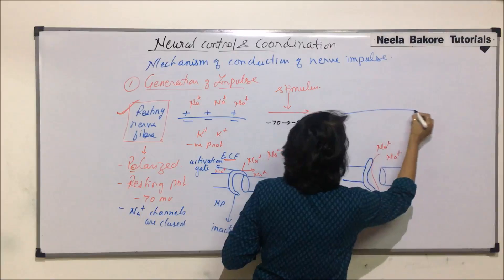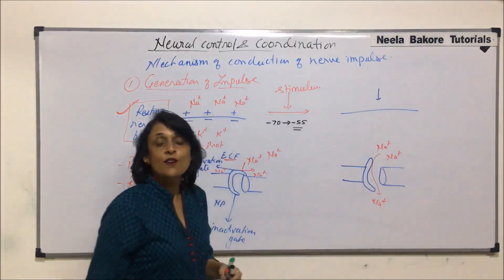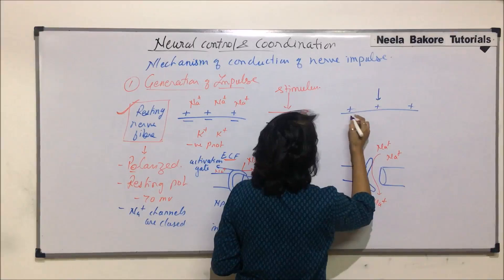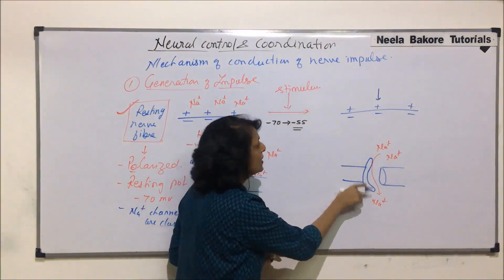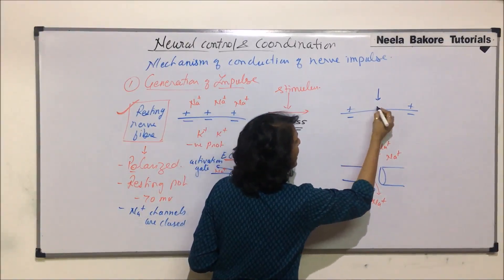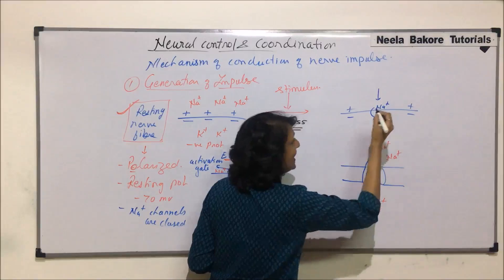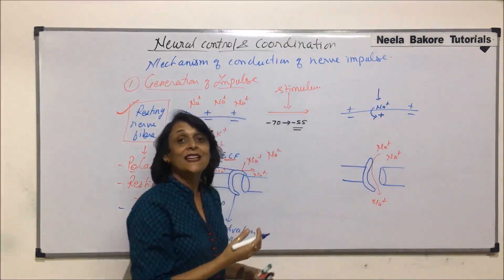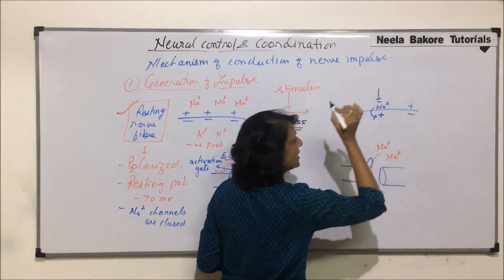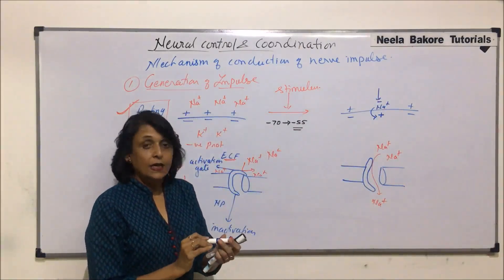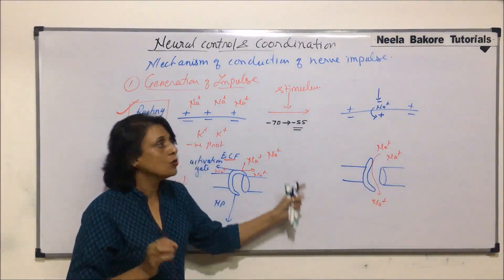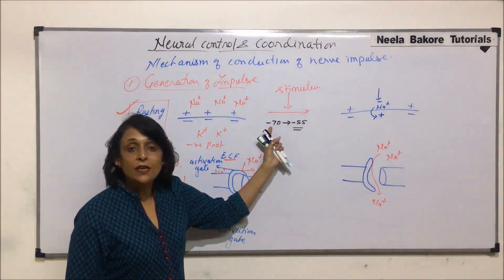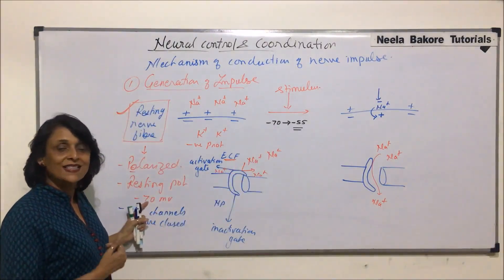Translating this to the line diagram: this was our membrane, and this is the place where the stimulus was received. It was electropositive on the outer side and negative on the inner side. As soon as these channels open, the positively charged sodium ions move in. As they move in, the inner side of the membrane becomes comparatively electropositive, and the outer side becomes electronegative.